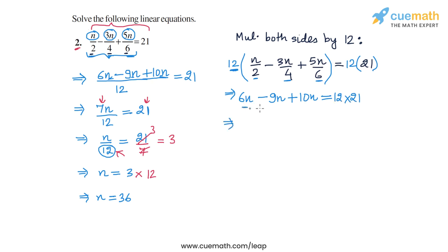Now on the left hand side, we have 6n minus 9n, that's minus 3n plus 10n. So we get 7n. And on the right side, we have 12 into 21. And now let's divide both sides of the equation by 7.